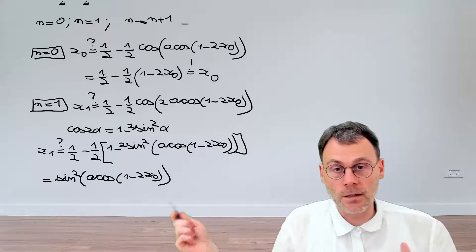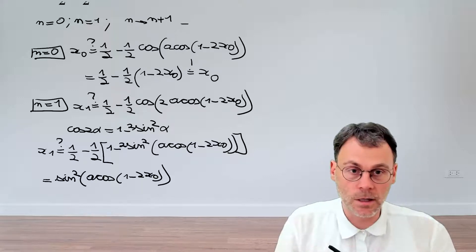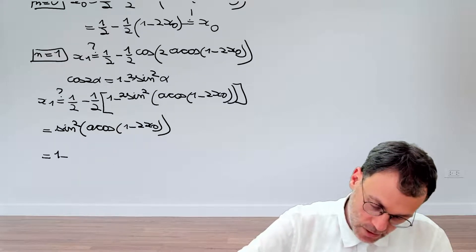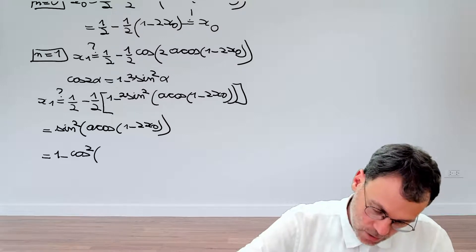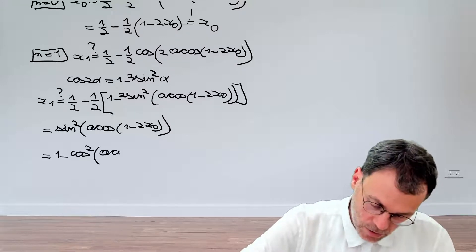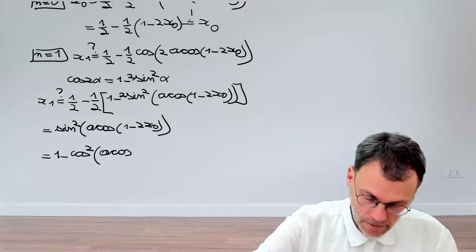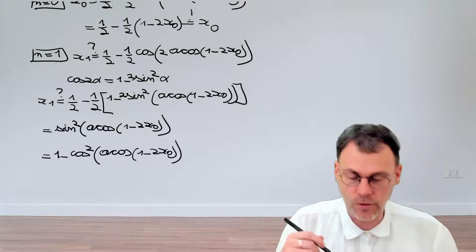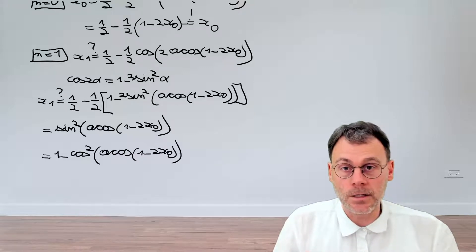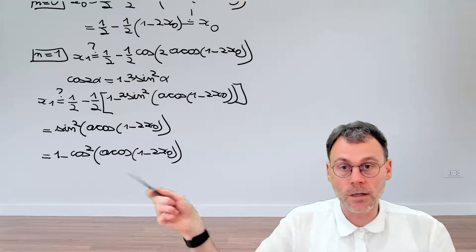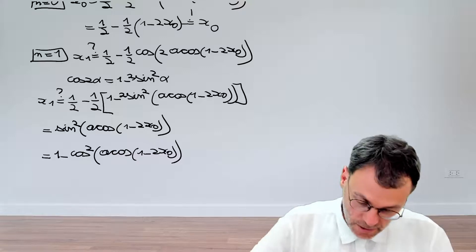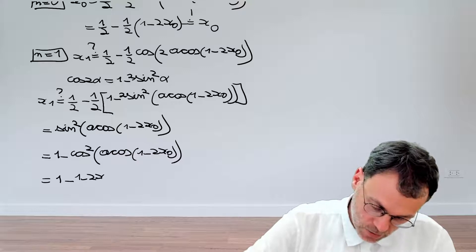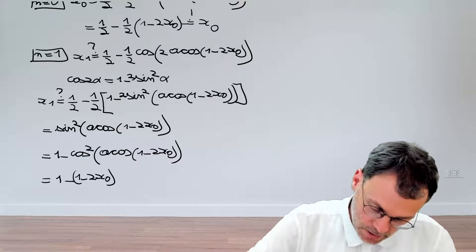The arc cosine and sine don't cancel immediately. However, it's straightforward: sine squared is one minus cosine squared. So we get one minus cosine squared of arc cosine of one minus two x₀, and this time the cosine and arc cosine do cancel, giving us one minus one minus two x₀ squared.